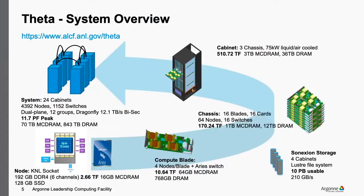A quick overview of the system: from the bottom left is the individual KNL socket, where you have the 64 cores, 192 GB of DDR memory, and 16 GB of MCDRAM. Four of those nodes fit into a blade, sixteen blades fit into a chassis, three chassis make up a rack, and in total the Theta system comprises 24 racks. The network uses Dragonfly topology with 12 groups and full terabyte-per-second bisection bandwidth. Total on the machine: 70 terabytes of MCDRAM and 843 terabytes of DRAM.